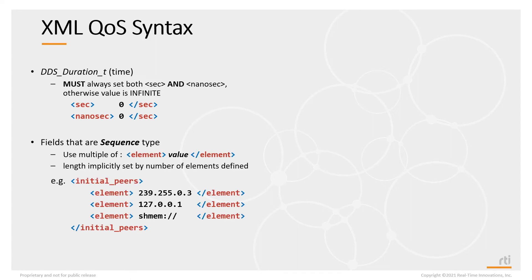For fields that are of sequence type — a variable-length list — you simply use multiple elements in XML. The number of elements that appear in that field is the length of the sequence. You don't have to explicitly set the length of a sequence in XML as you would in code. You just define each element, and the number of elements will be counted to determine the length of the sequence.